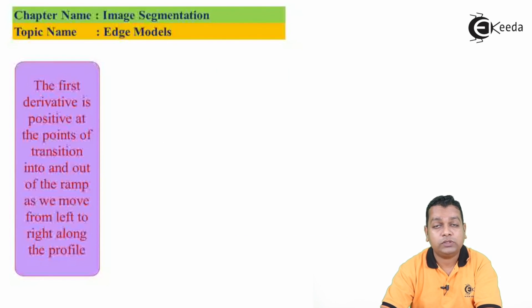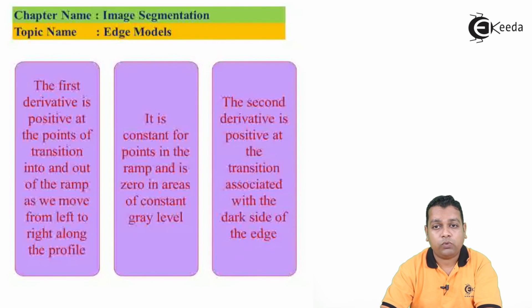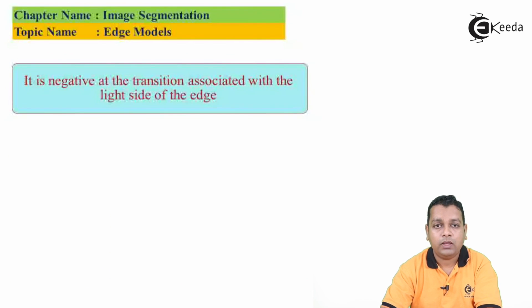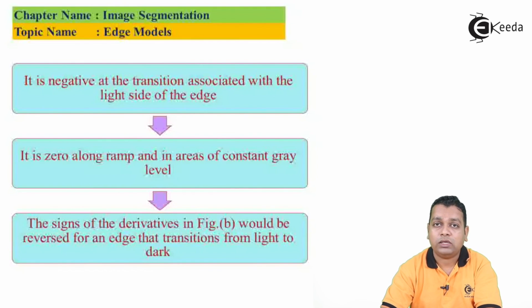The first derivative is positive at the points of transition into and out of the ramp as we move from left to right along the profile. It is constant for points in the ramp and is zero in areas of constant gray level. The second derivative is positive at the transition associated with the dark side of the edge, negative at the transition associated with the light side, and zero along the ramp and in areas of constant gray levels.